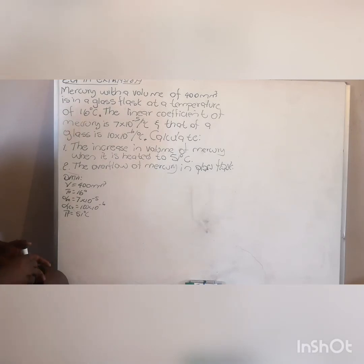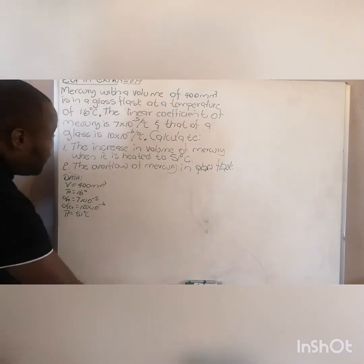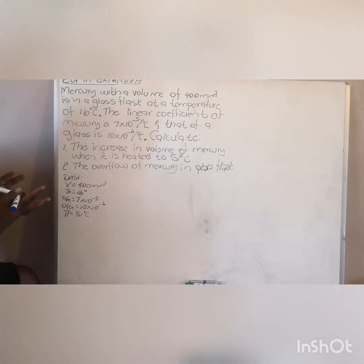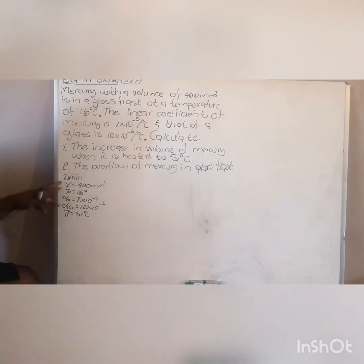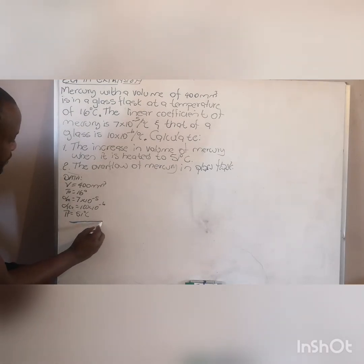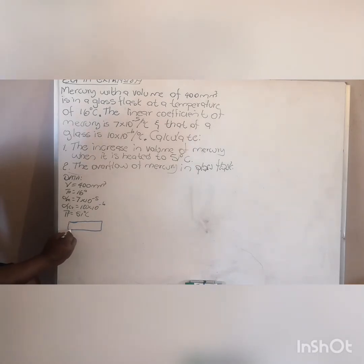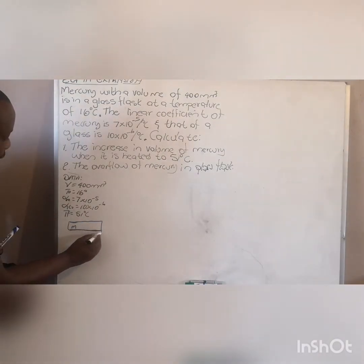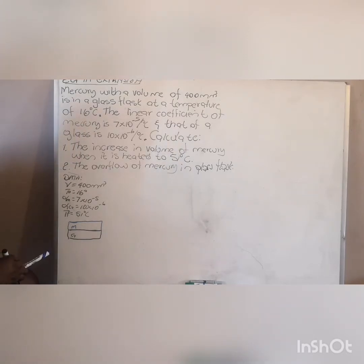Looking at the given data, this is the mercury inside a cast — a cast containing mercury. They both have an initial volume of 400 millimetre cubed. Let me draw this: this is my mercury, and this is the cast containing the mercury. They both start with an initial volume of 400.